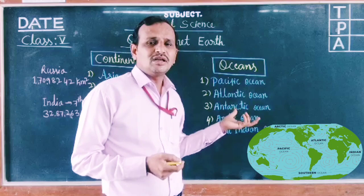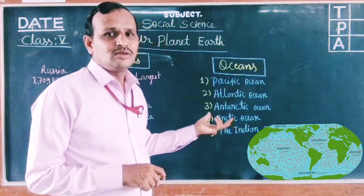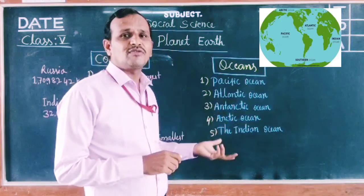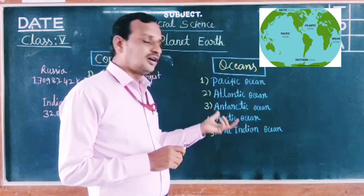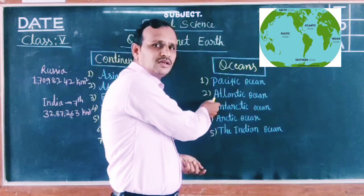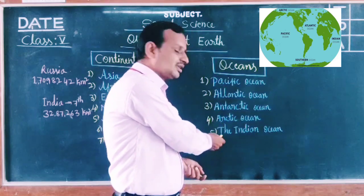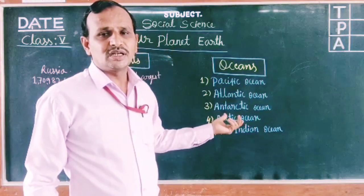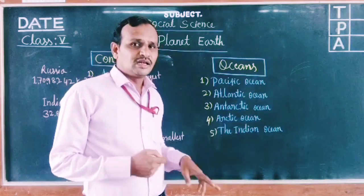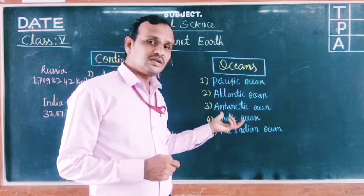The oceans cover 71% of the Earth's surface. There are five oceans on the Earth. They are: first, the Pacific Ocean; second, the Atlantic Ocean; third, the Antarctic Ocean; fourth, the Arctic Ocean; and fifth, the Indian Ocean. These five oceans cover the Earth's surface.